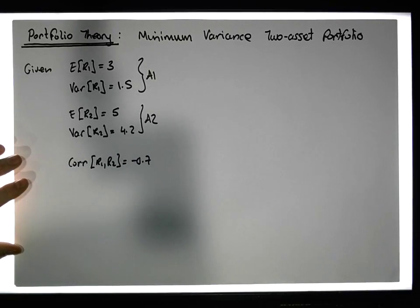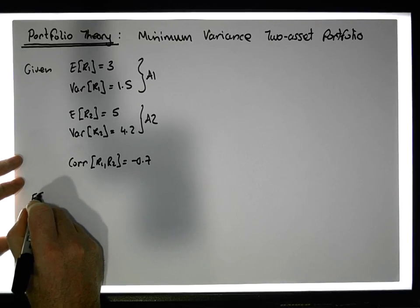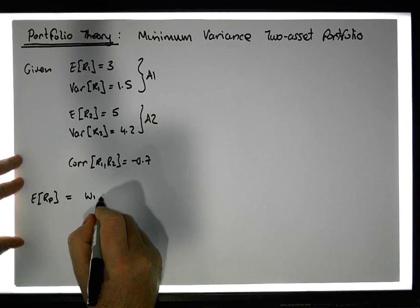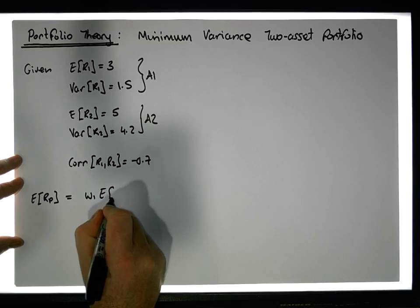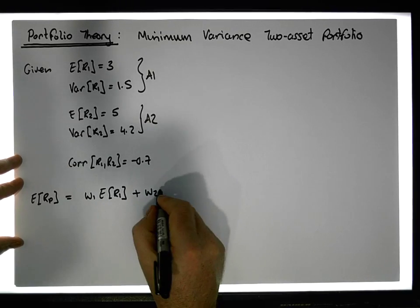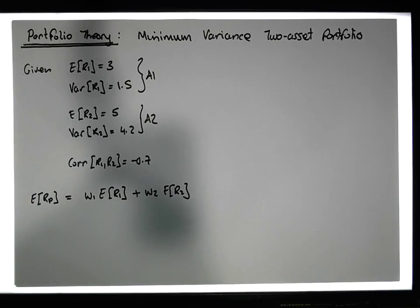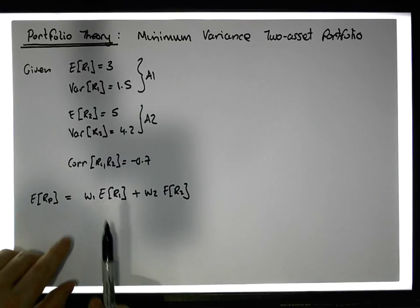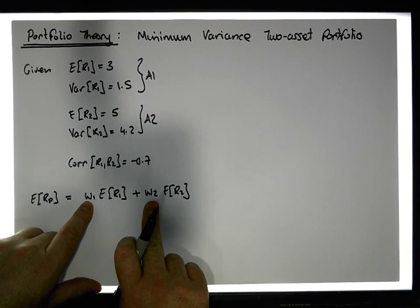The expected return of the portfolio is going to be equal to the proportion of asset one in the portfolio — that's w1 times the expected return of asset one — plus the proportion w2 times the expected return of asset two. To calculate the expected return of this portfolio, we need to know what proportion of asset one and asset two is going into the mix.